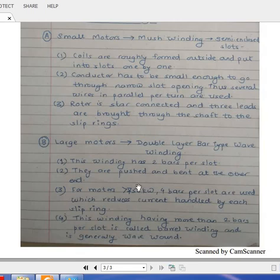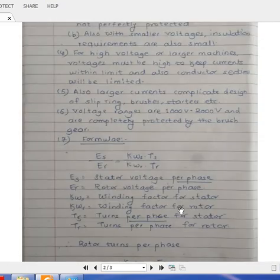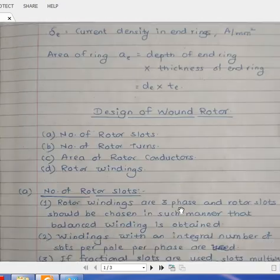Because you are providing a number of parallel paths, these typical slots which are having four bars per slot, or when windings are having more than two bars per slot, these windings are called parallel windings and are generally wave wound.